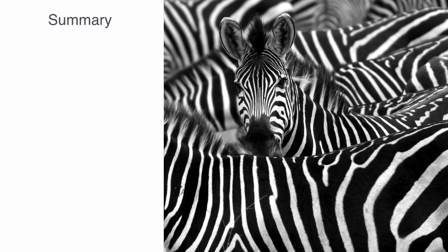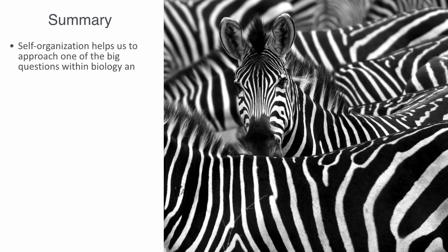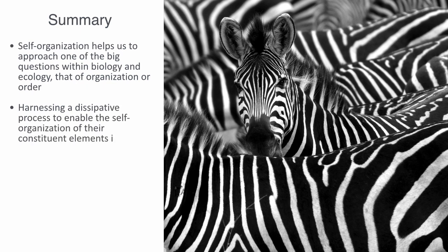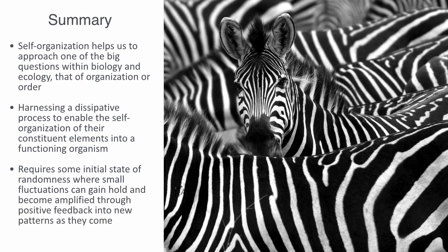In this video we've been covering the topic of self-organization within biological systems. We talked about how the theory of self-organization helps us to approach one of the big questions in biology and ecology, that of organization or order. In particular, how biological systems can evolve to exhibit greater structure and complexity over time, by harnessing a dissipative process to enable the self-organization of their constituent elements into a functioning organism. We then discussed the basic workings of this process of self-organization, as one that requires some initial state of entropy or randomness, where small fluctuations can gain hold and become amplified through positive feedback into new patterns, as they come to form stable basins of attraction that close in on themselves, producing an emergent global pattern.